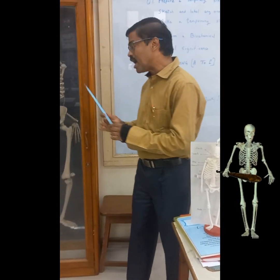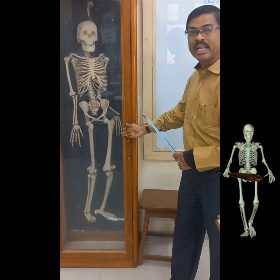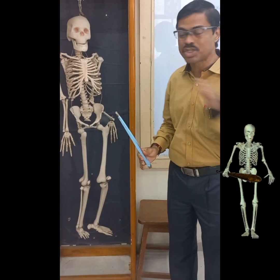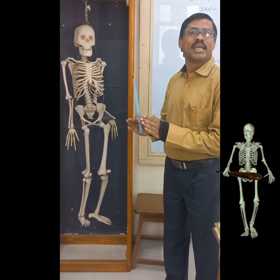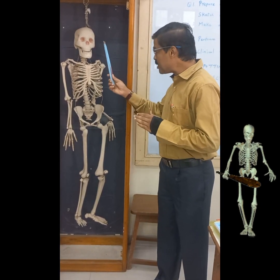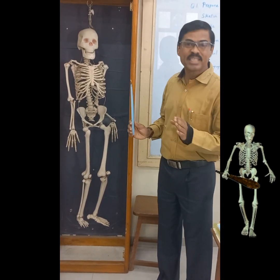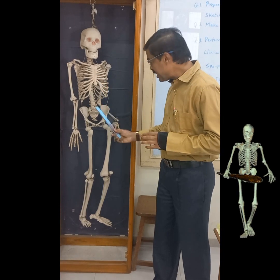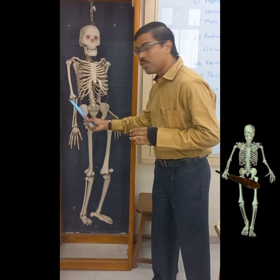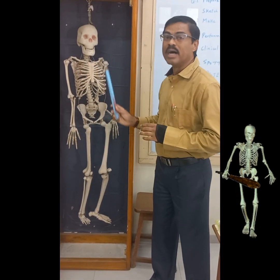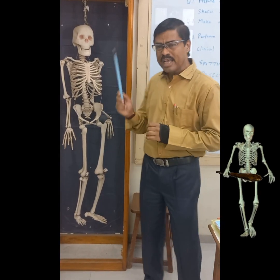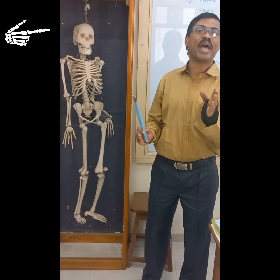We have a skeletal model where you can see all 206 bones in detail. The human skeleton has two main parts: the axial part and the appendicular part. The axial part consists of the skull, the thoracic cage, and the vertebral column, whereas the appendicular part forms the forelimbs, the hindlimbs, and the girdles — pectoral and pelvic. The axial skeleton has 80 bones and the appendicular skeleton has 126.